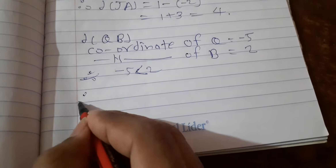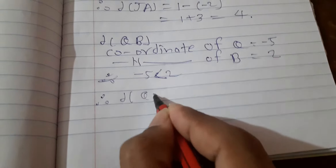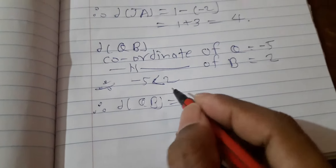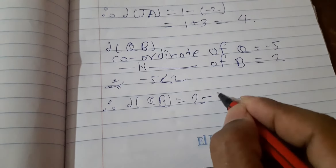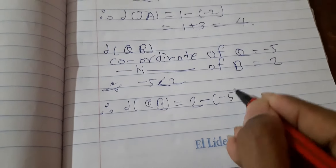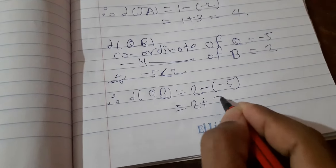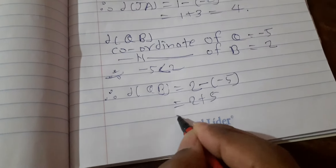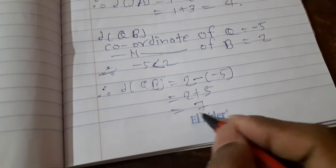Therefore, we write the larger value first: distance Q B is equal to 2 minus minus 5. Minus minus becomes plus, so 2 plus 5 is 7. The answer will be 7. Is it correct?